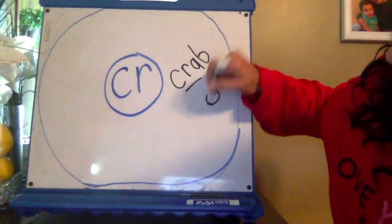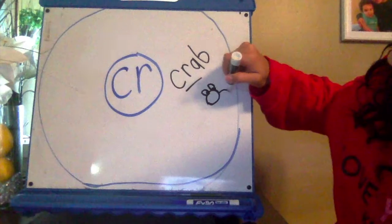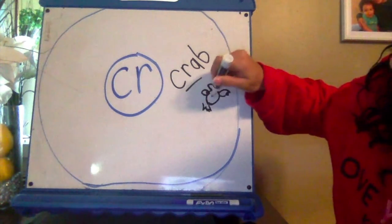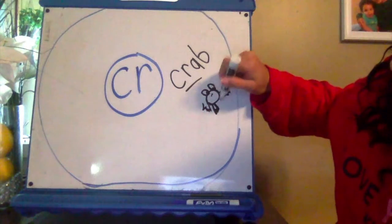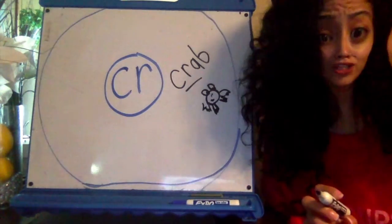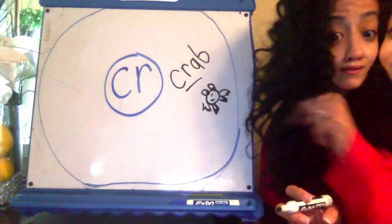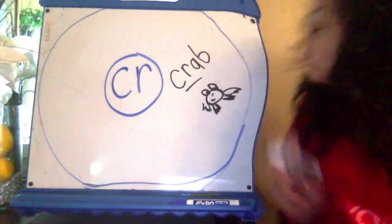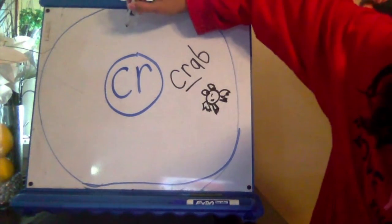I'm going to draw a little crab — I'm going to try my best. I don't really know how to draw a crab, but I'm going to do like little claws. Like that. A crab. I tried my best. I don't know if it looks like a crab, but hey. C-R-A-B. Let's try another one.